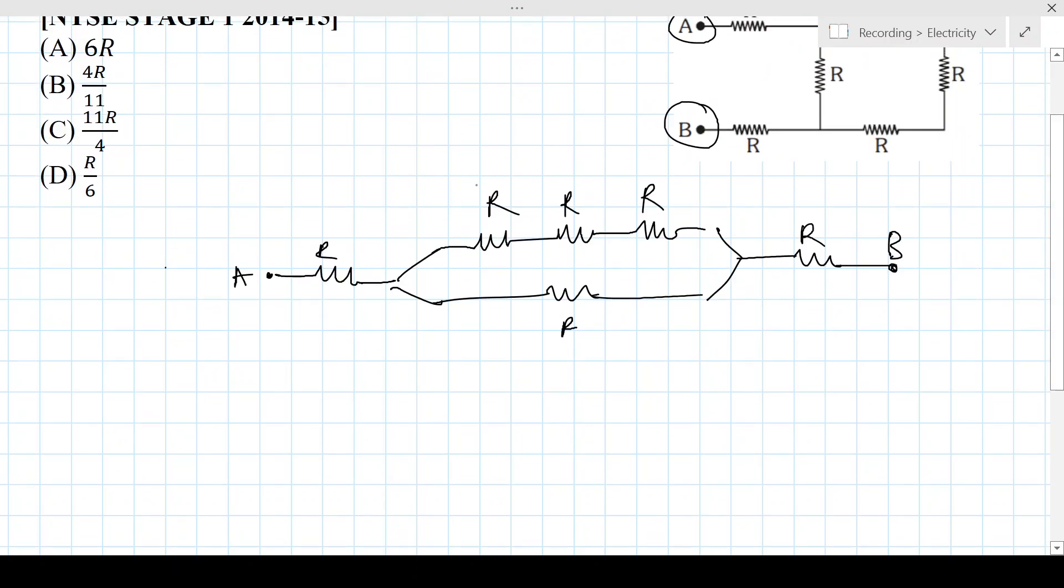So, firstly, let's find over here in this series. So, R is equal to R plus R plus R, that is 3R. So, now our circuit looks like this: A, R, 3R, R, then merge, R, and then there's B.